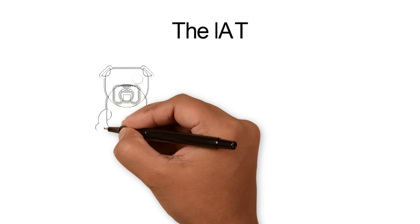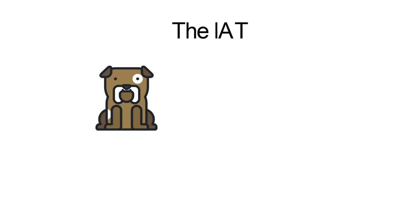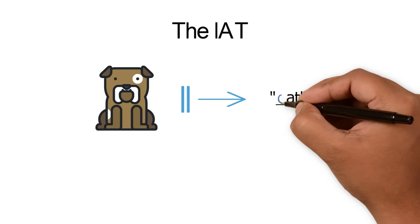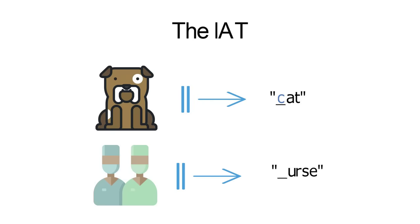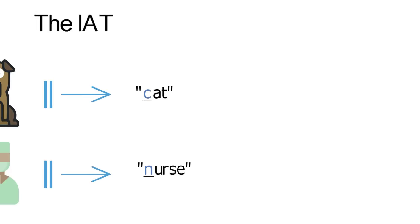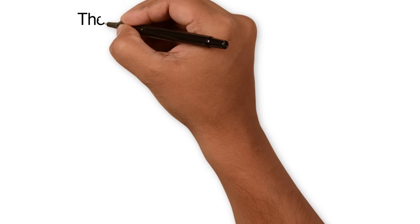Understanding the IAT, and indeed all reaction time measures, begins with a basic insight: it's always easier for our brains to sort two concepts together if they are closely associated in our minds. For example, if I say the word "dog" and ask you to complete this word, you'll be quicker to think "cat" than "bat." Or if I say the word "doctor," you will be quicker to think "nurse" than "purse." Armed with this insight, scientists created the IAT, which measures how quickly we sort various pictures and words flashed on a computer screen together. Our sorting speed reflects how tightly we associate any two concepts — quicker sorting means stronger association.